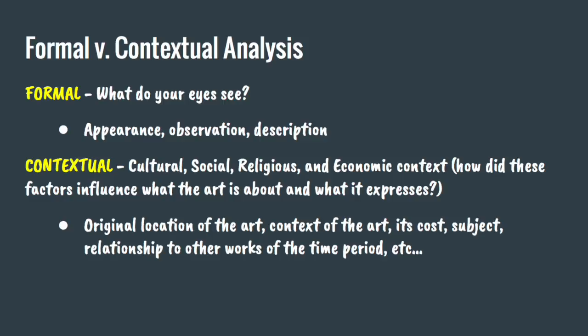While studying the meaning of a work of art, art historians use formal and contextual analysis. Formal analysis focuses on what is seen upon examining the artwork itself — what do your eyes see? Appearance, observation, descriptions. While contextual analysis looks for meaning in the cultural, social, religious, and economic context in which the work was produced — that's all the various factors that influence the meaning of the work itself.